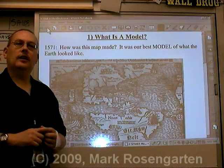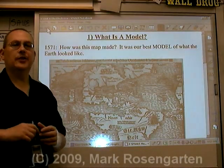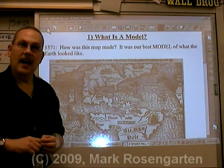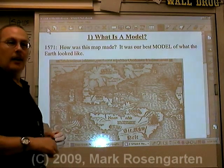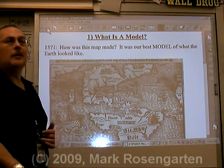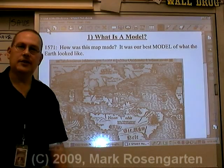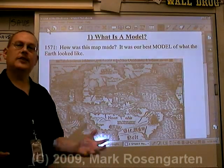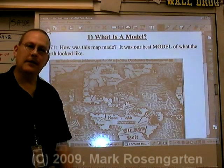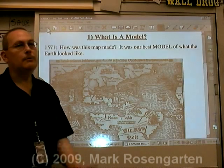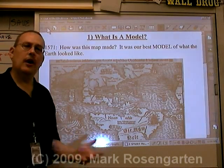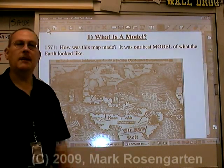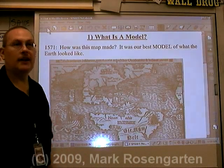Today we're going to take a look at the history of the development of the model of the atom. A model is a representation of something that otherwise can't be seen. Most of science is about developing models, mostly mathematical, to describe phenomena that we see and make predictions based on those models.